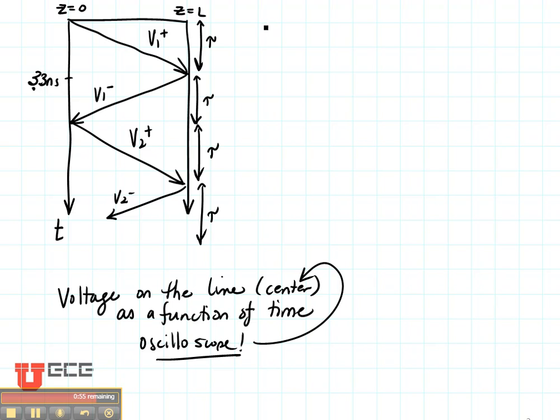So what we're going to do in that case is we're going to draw a timeline down here parallel to our bounce diagram and we're going to consider the voltage at the center of the line which is L over 2. That's right here. We're going to consider the voltage at the center of the line as a function of time.